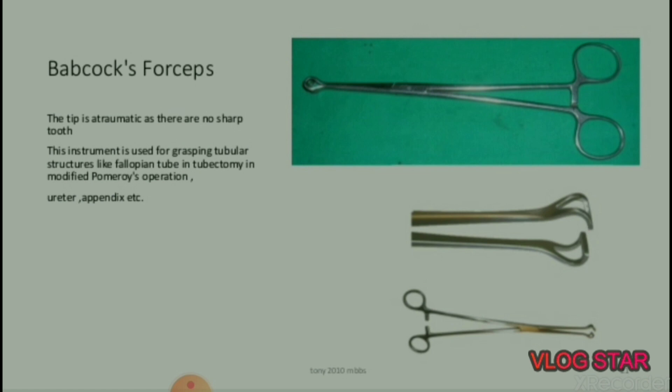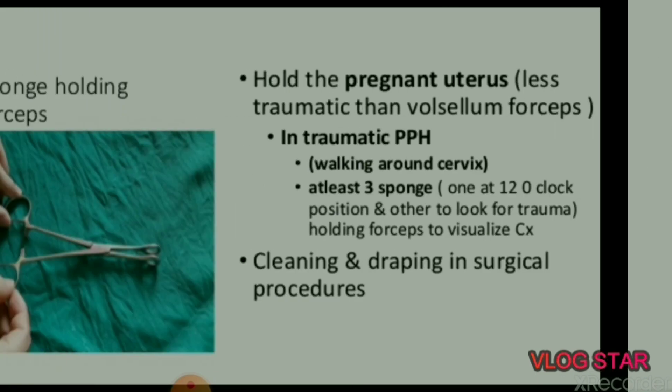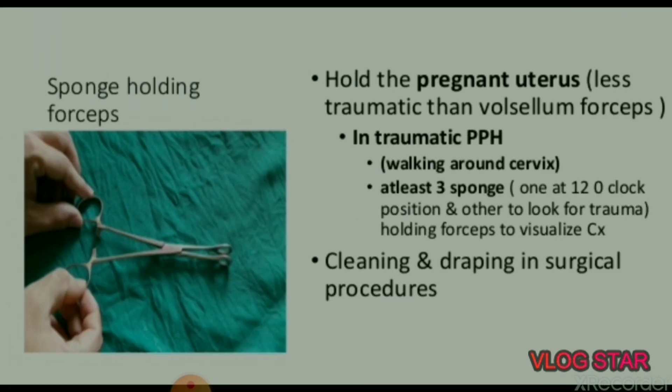Next instrument is Babcock forceps. The tip is atraumatic as there are no sharp teeth. This instrument is used for grasping tubular structures like the fallopian tube in tubectomy in modified Pomeroy's operation, ureter, appendix, etc.